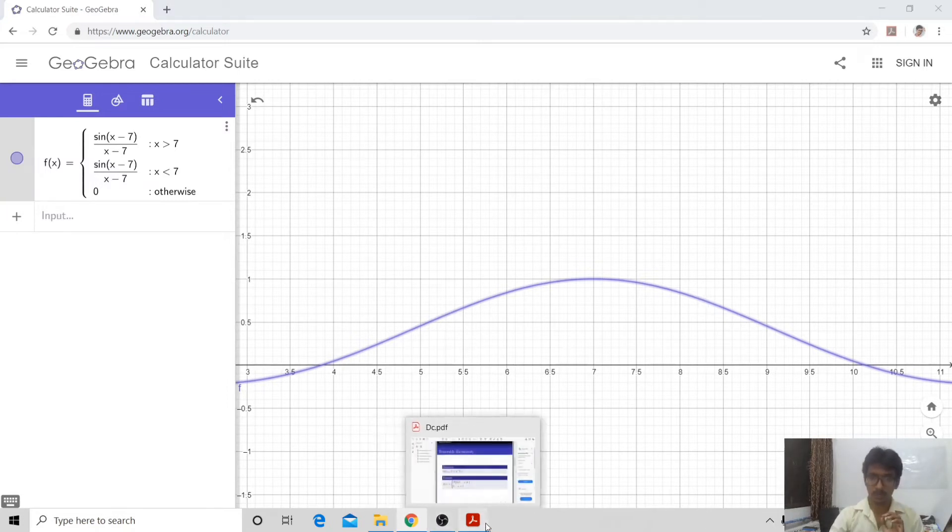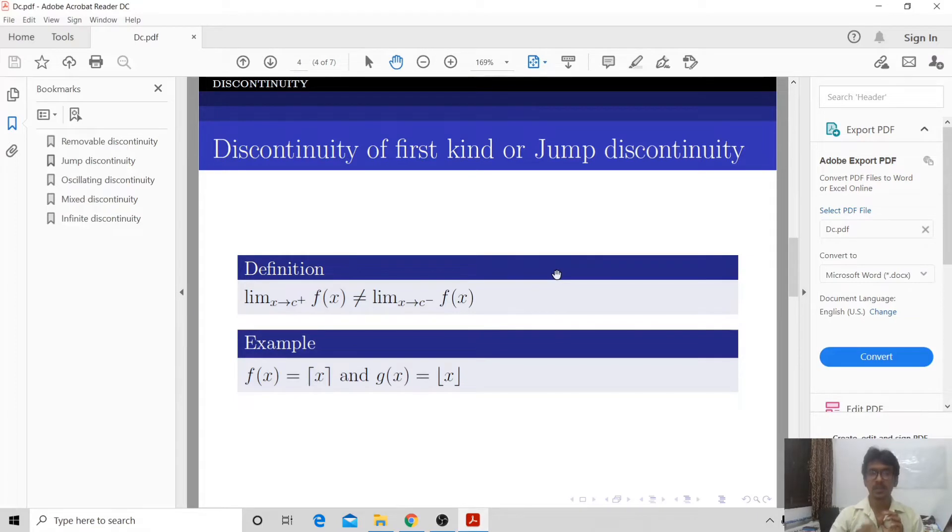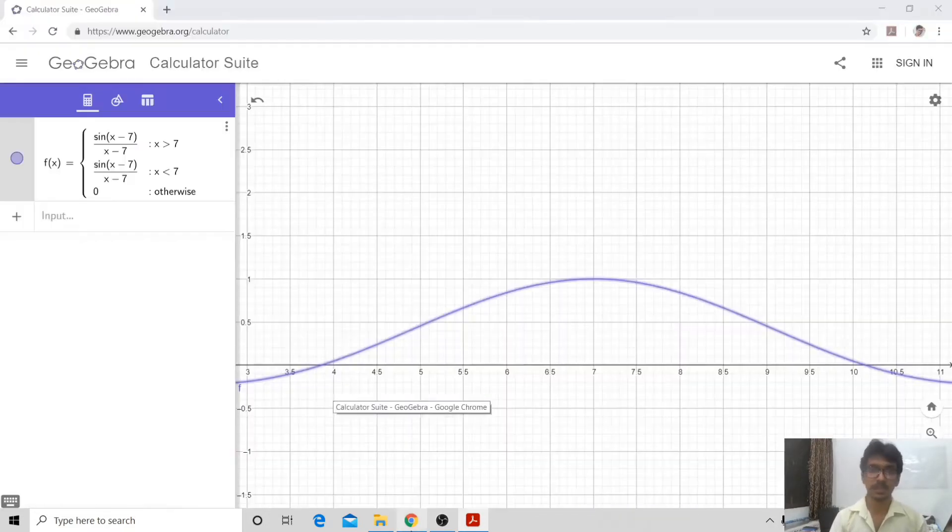Now let us see the second type of discontinuity, that is discontinuity of first kind or jump discontinuity. Here, the example shows the left limit and the right limit are different. Here they have given ceiling function and floor function as an example for jump discontinuity. Let us see how it works.